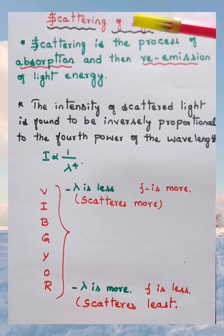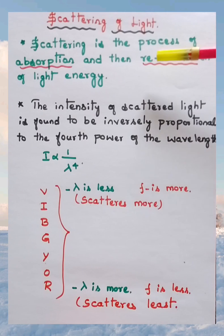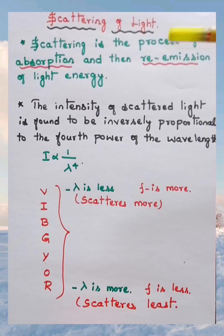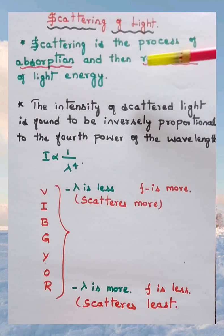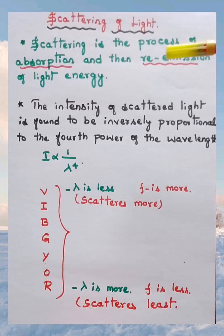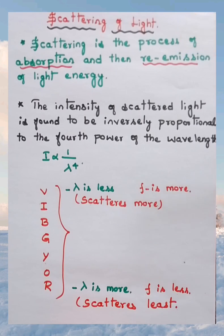Now let's move into the topic: scattering of light. Sunlight enters the Earth's atmosphere and gets scattered — it spreads in all directions — by dust particles and water molecules present in the atmosphere. A small example: if there is a hole in the roof of your house and light enters through it, you can observe a lot of dust particles in that dark room. That is scattering of light, first studied by a scientist called Rayleigh.